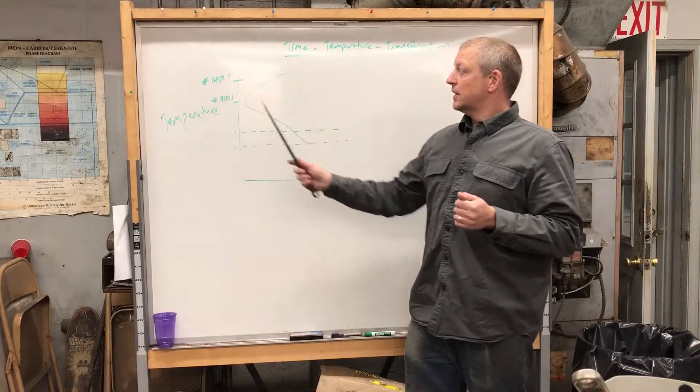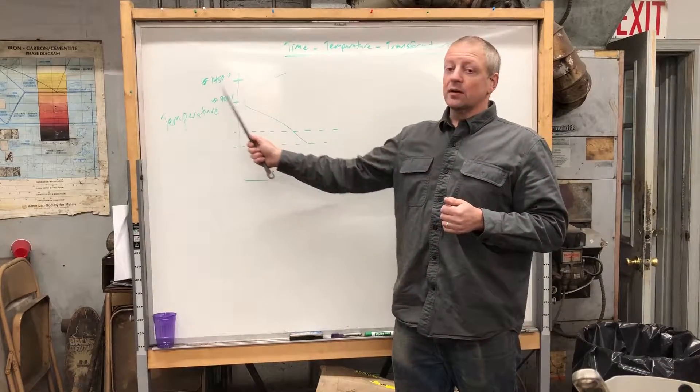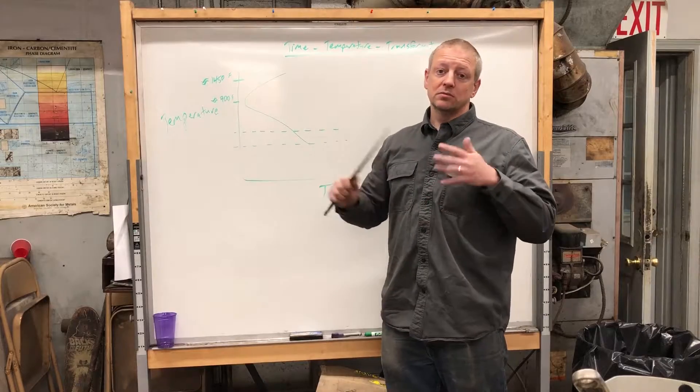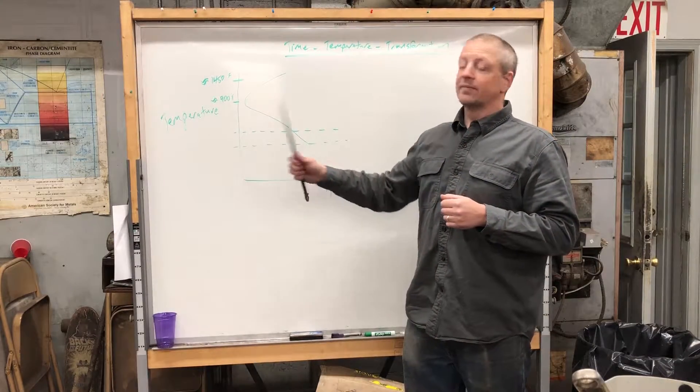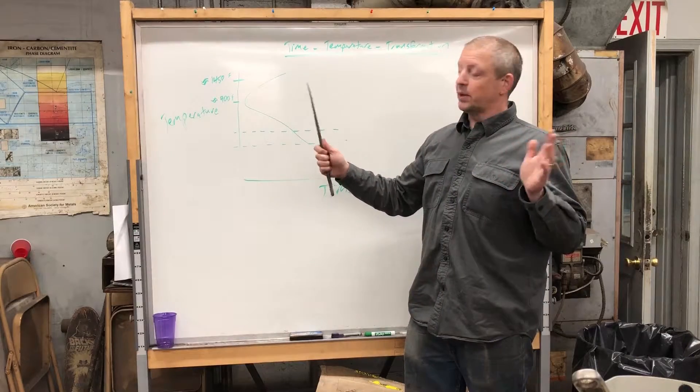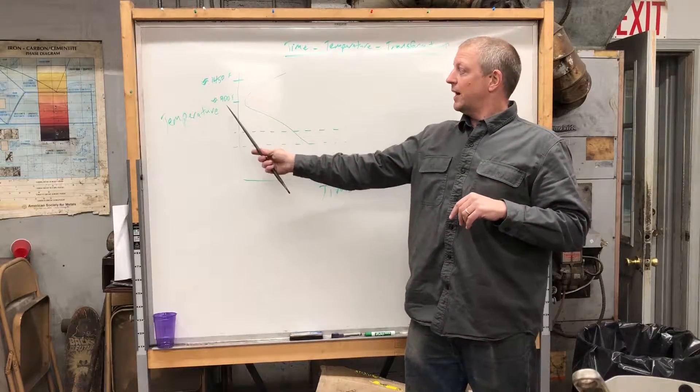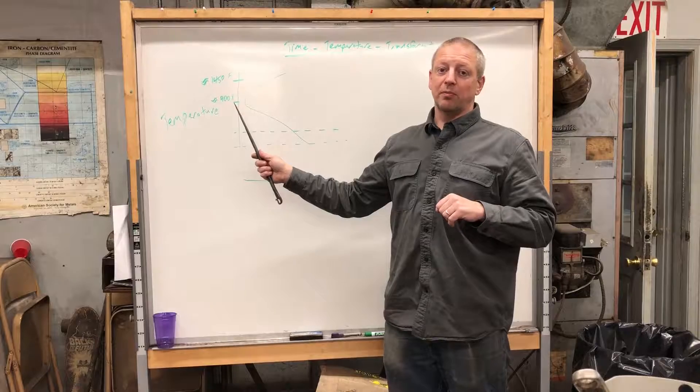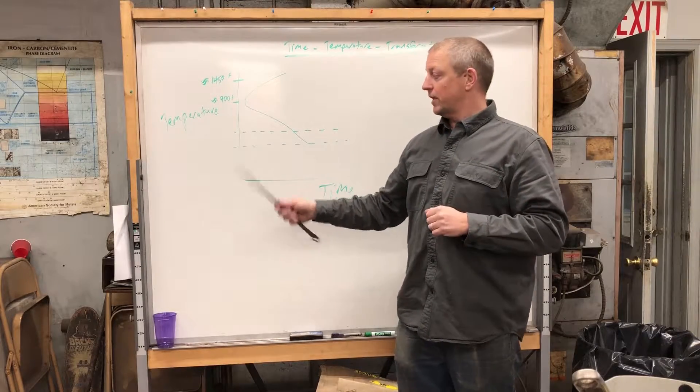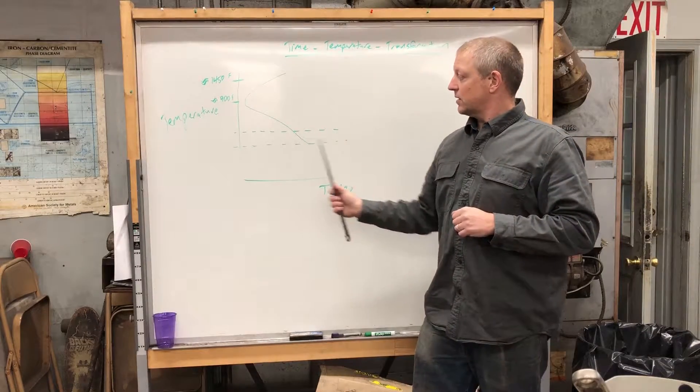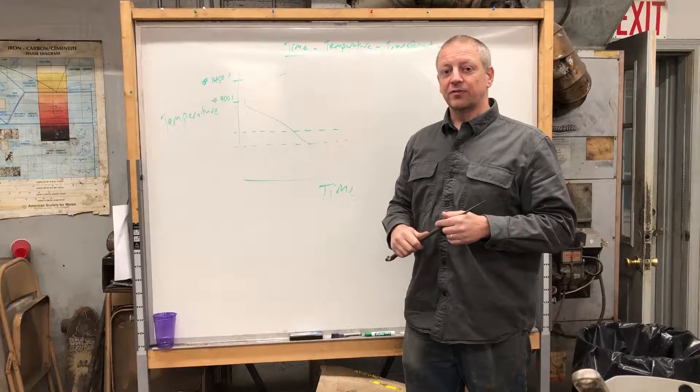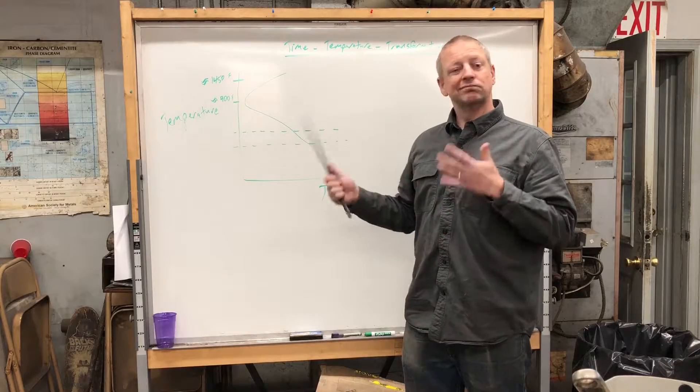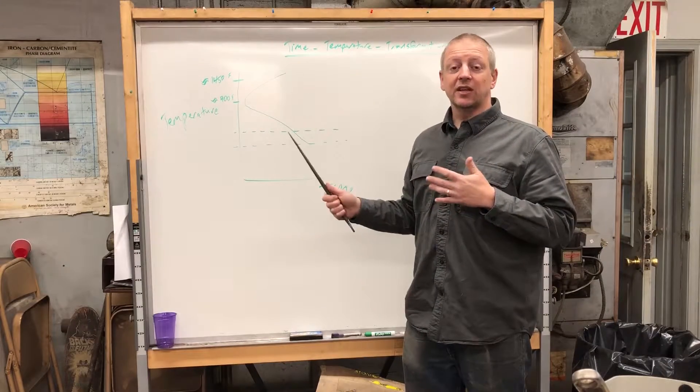Basically, I've noted on here critical temperature, roughly 1450 Fahrenheit—changes depending on the steel but we'll just go with it for now. 900 degrees becomes important for reasons we'll get into later. And then we have down here a band between say 400 and 600 degrees Fahrenheit. Again, I'm not dealing in exact numbers here, just some generalities.